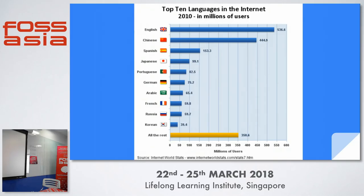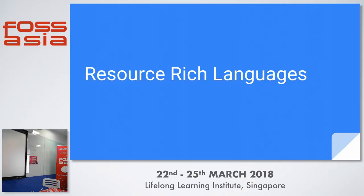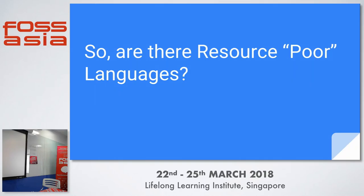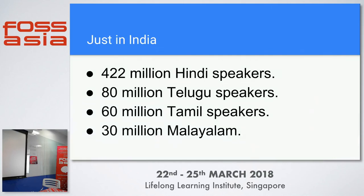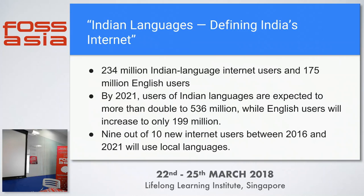We'll discuss how to get into these languages and take them on par with languages like English. Before that, we have to discuss what resource-rich languages are. English and a few others are resource-rich because there are lots of tools, research, and corpora for them. But 95% of languages are resource-poor, and just in India, this is the amount of people who speak these so-called resource-poor languages. There's no solid foundation for developing tools for them.